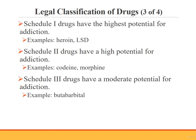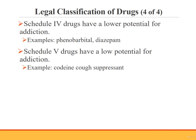Schedule 3 drugs have a moderate to low potential for addiction and abuse; examples are butabarbital, anabolic steroids, and acetaminophen with codeine. Schedule 4 drugs have a lower potential for addiction and abuse than Schedule 3 drugs; examples include phenobarbital and diazepam. Finally, Schedule 5 drugs have a low potential for addiction and abuse — an example is low-strength codeine combined with other drugs to suppress coughing.